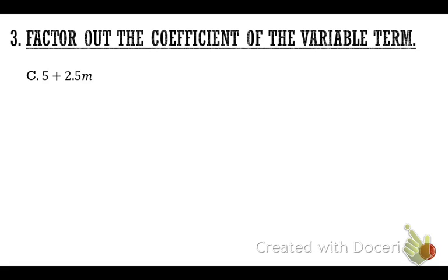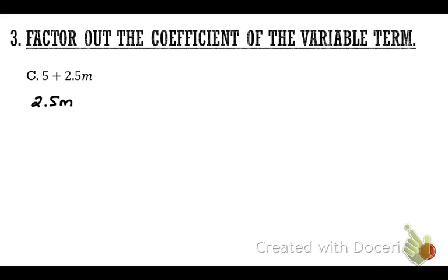Same instructions: factor out the coefficient of the variable term. There's something wrong with the original problem — the variable term is second, and we want it first. So reorder: positive 2.5m comes first, and positive 5 follows, giving us 2.5m plus 5.